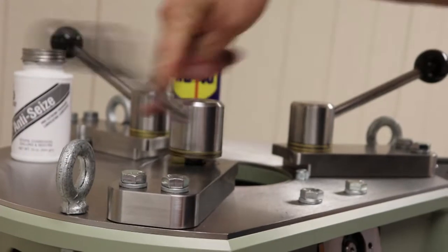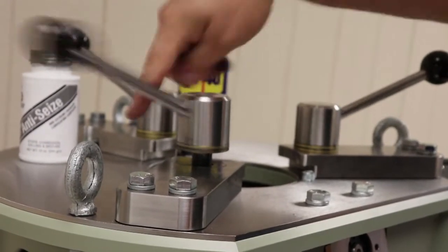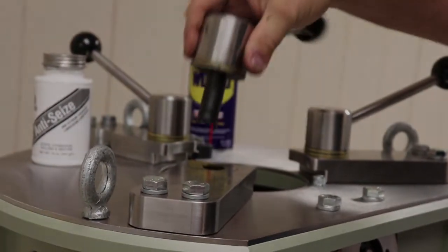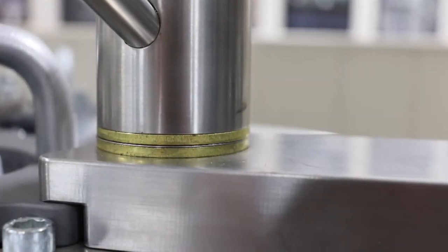Lastly, we will remove the mold top clamp handles individually one at a time. Pay close attention to the order of the brass washers and shims when removing them.